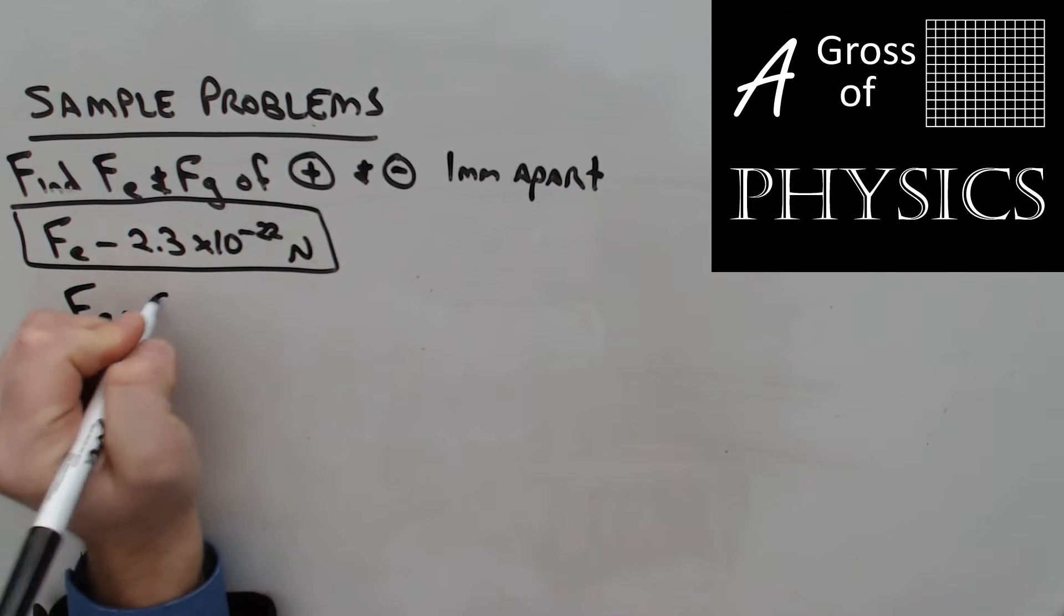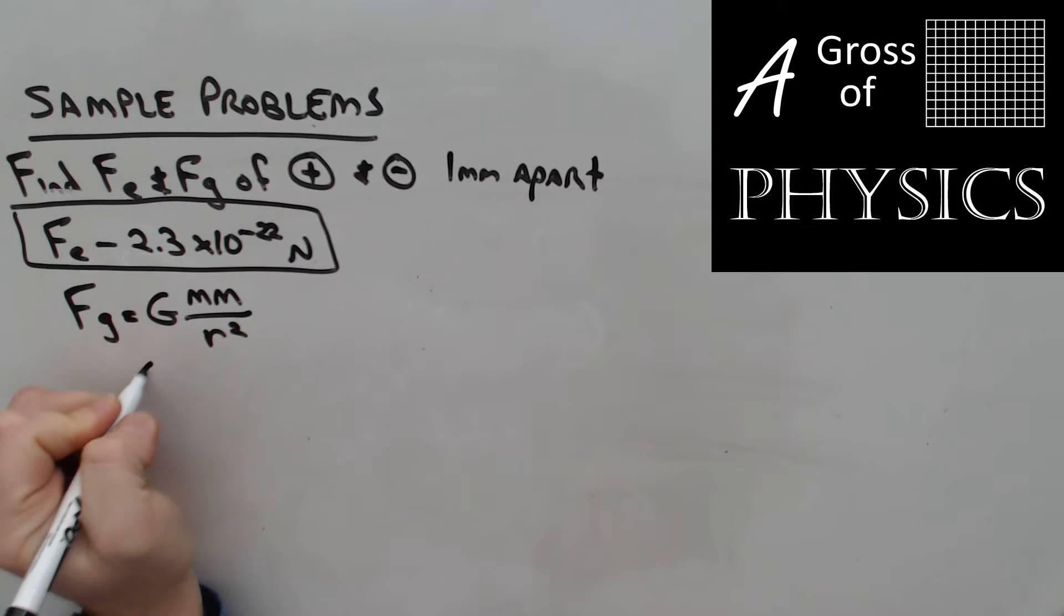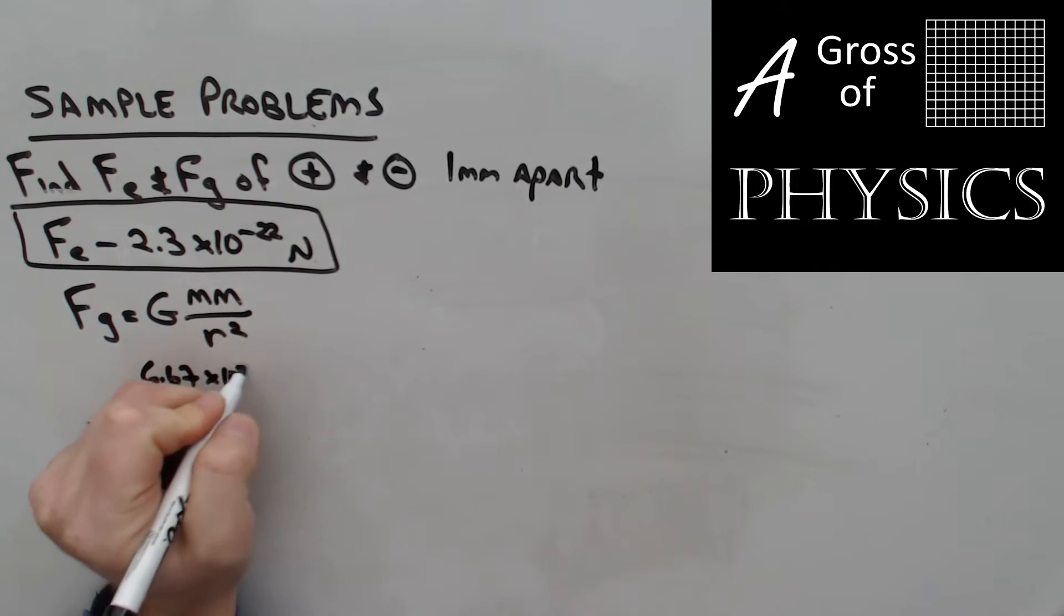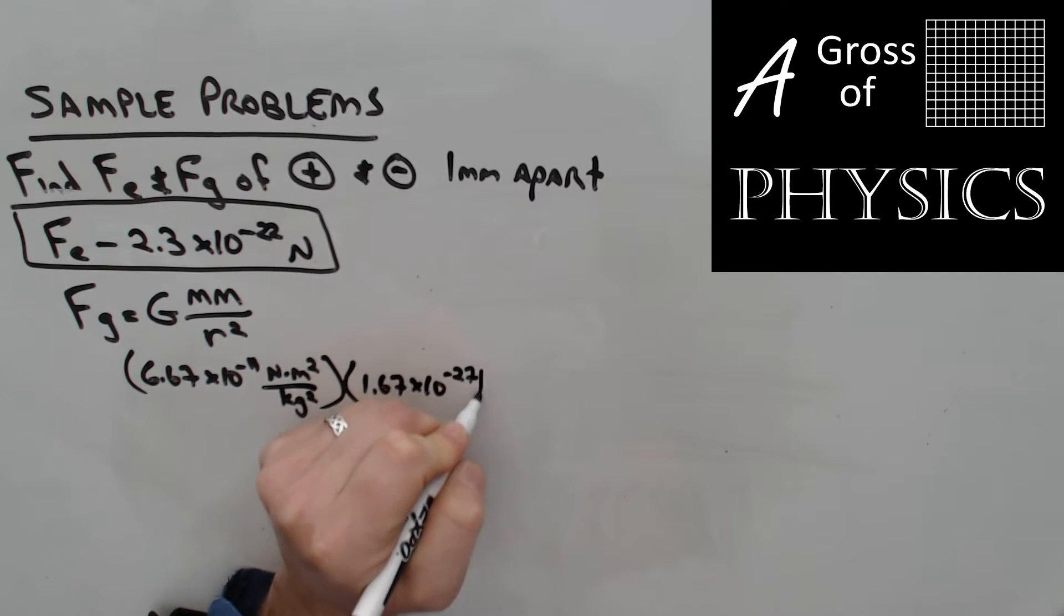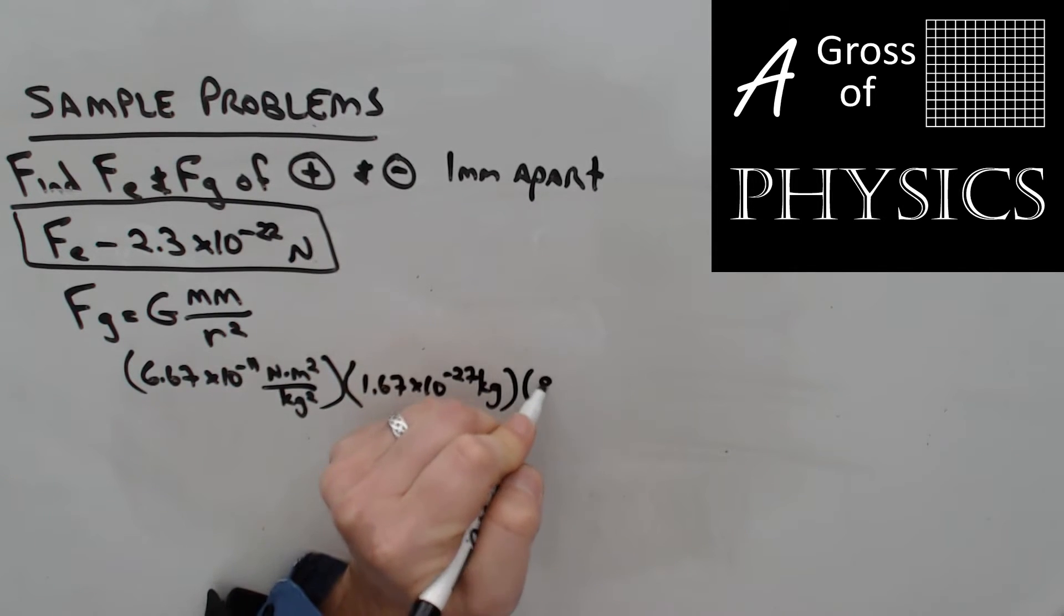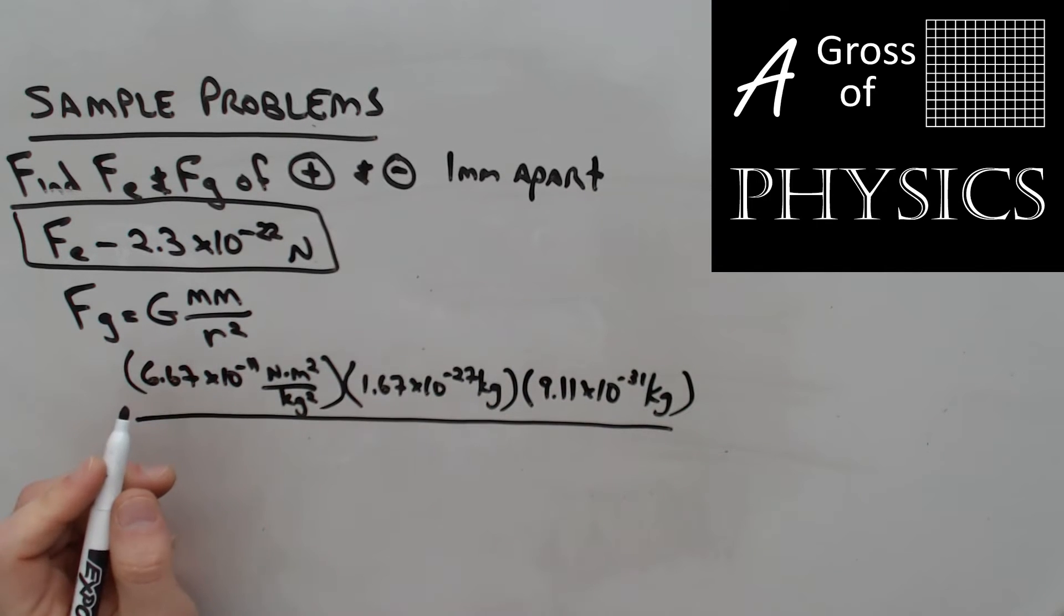The formula looks the same: Big G, MM over R squared. Now G is 6.67 times 10 to the negative 11 Newton meters squared over kilograms squared. Mass of the proton: 1.67 times 10 to the negative 27 kilograms. Mass of the electron: 9.11 times 10 to the negative 31 kilograms. All over 1 millimeter, which is 1 times 10 to the negative 3 meters squared.